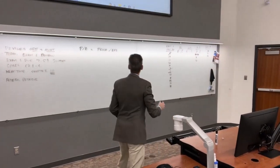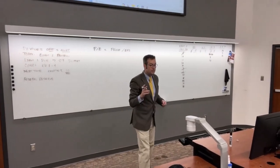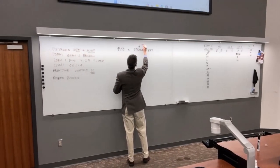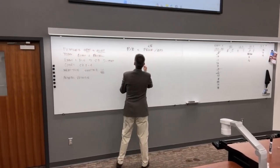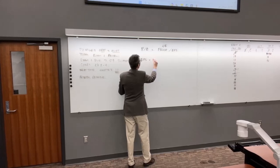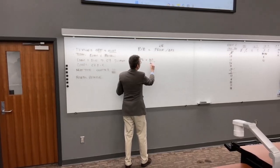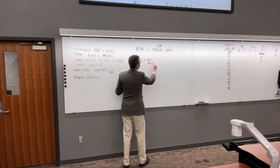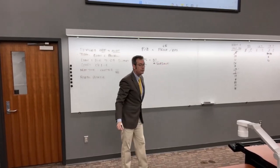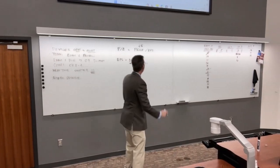I need to find earnings per share. The stock price is $5. Earnings per share equals net income divided by the number of shares outstanding, which is 5.5 million. So I need to figure out net income.